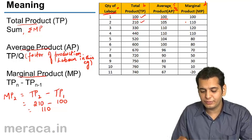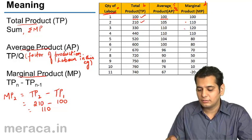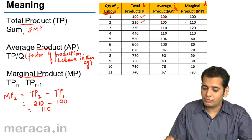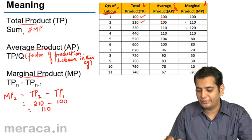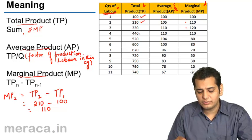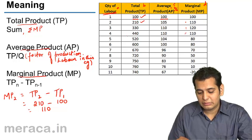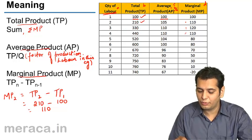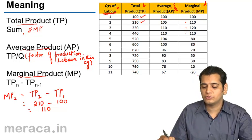When the third labor is employed, Total Product is 330, so the Marginal Product is 120 — that is 330 minus 210. When the fourth labor is employed, Total Product is 440 and the Marginal Product is 110 — calculated as 440 minus 330. From here, the Marginal Product also starts to fall.